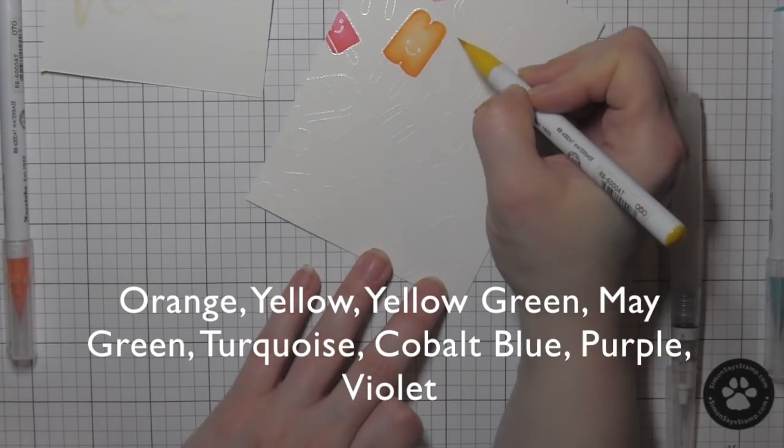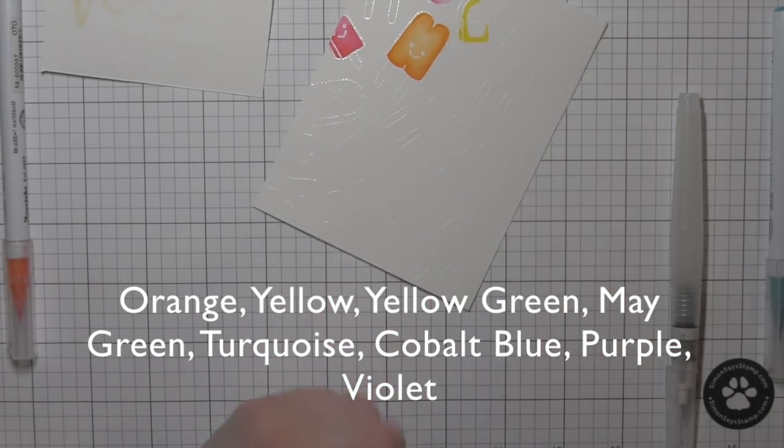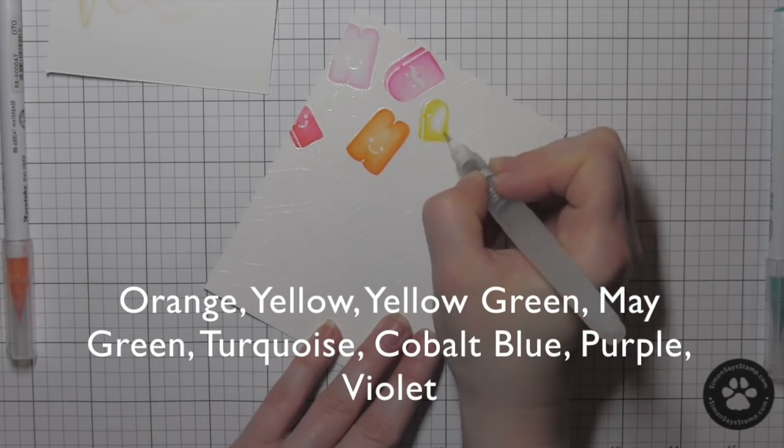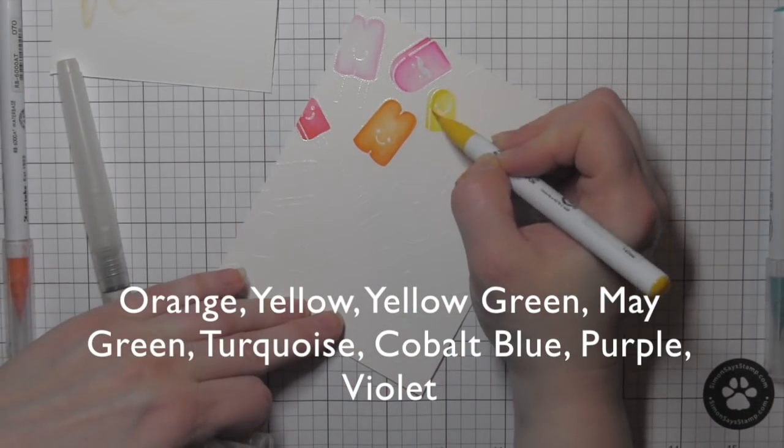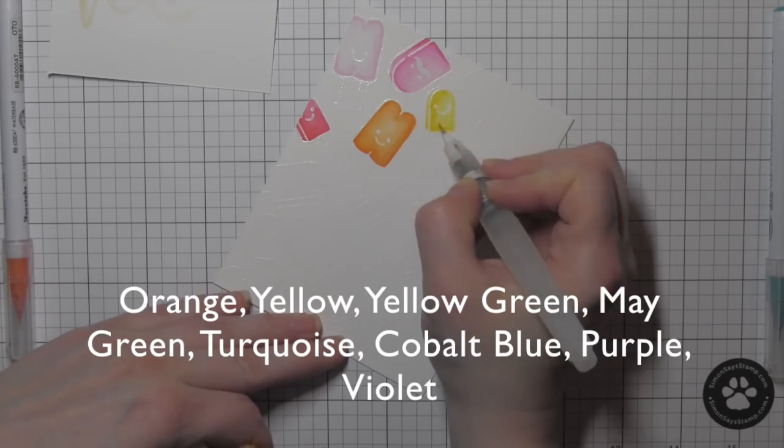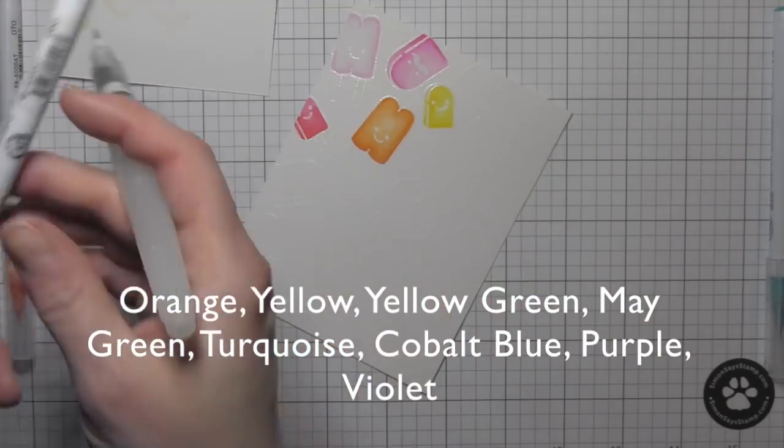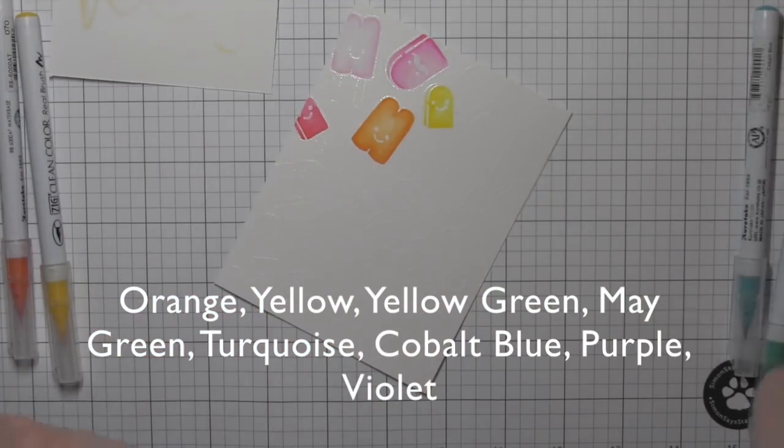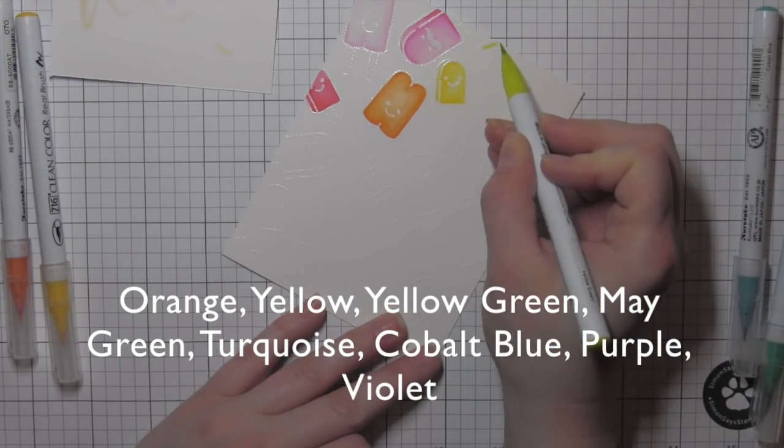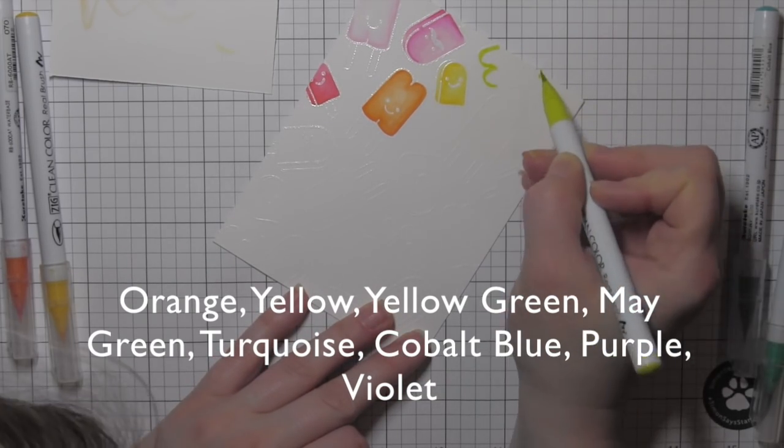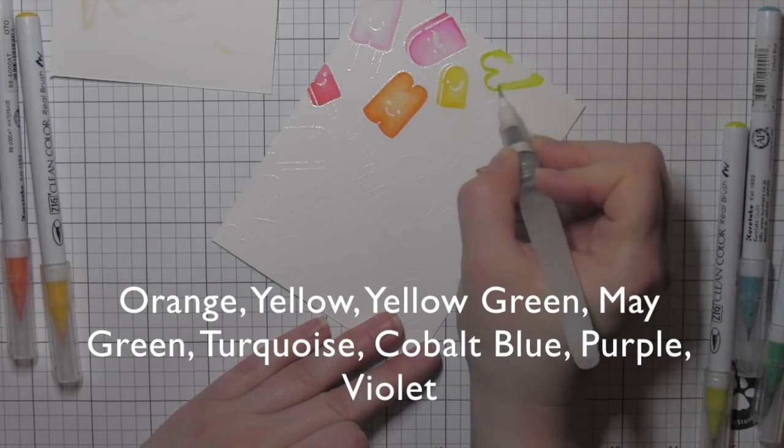And the little faces are going to of course be the embossed resist, so they're going to show up once I apply that color. The colors of markers I am using I have listed the names there along the bottom of the screen. They are also linked below the video here on YouTube and linked and listed on my blog post that coordinates with this video.